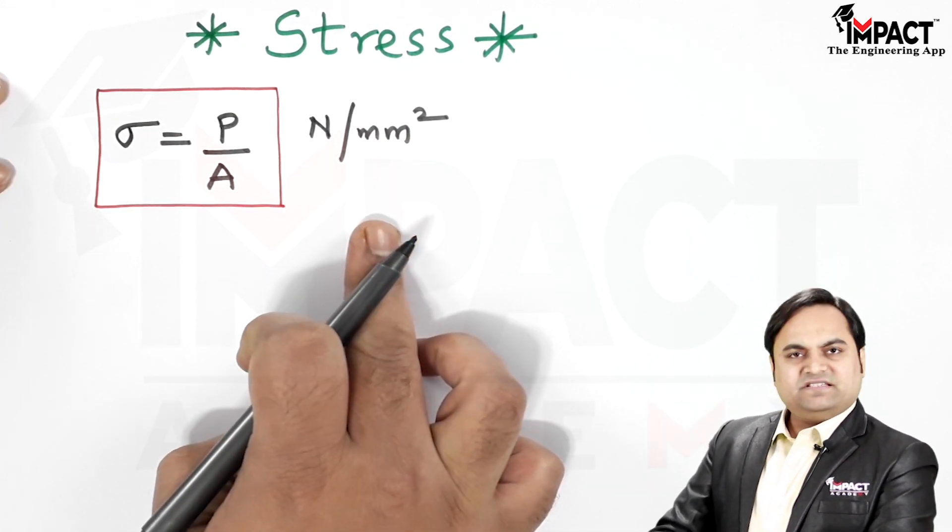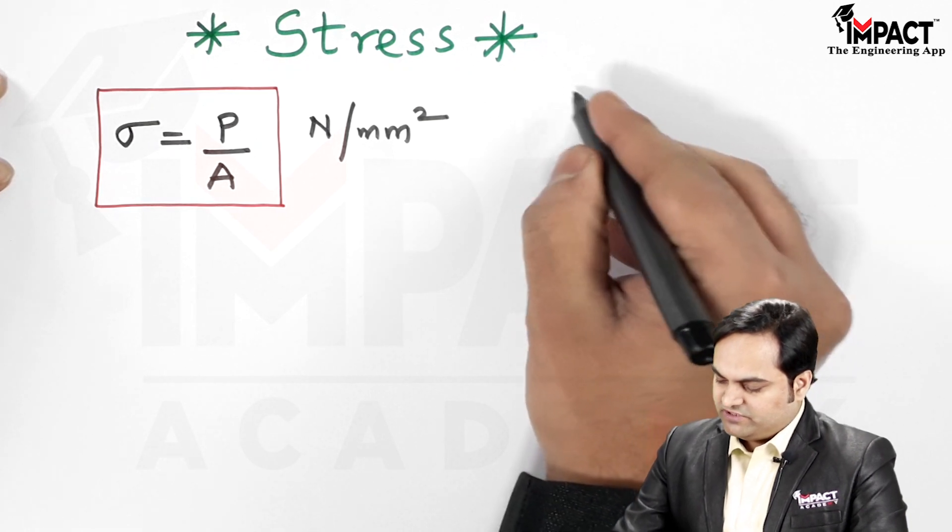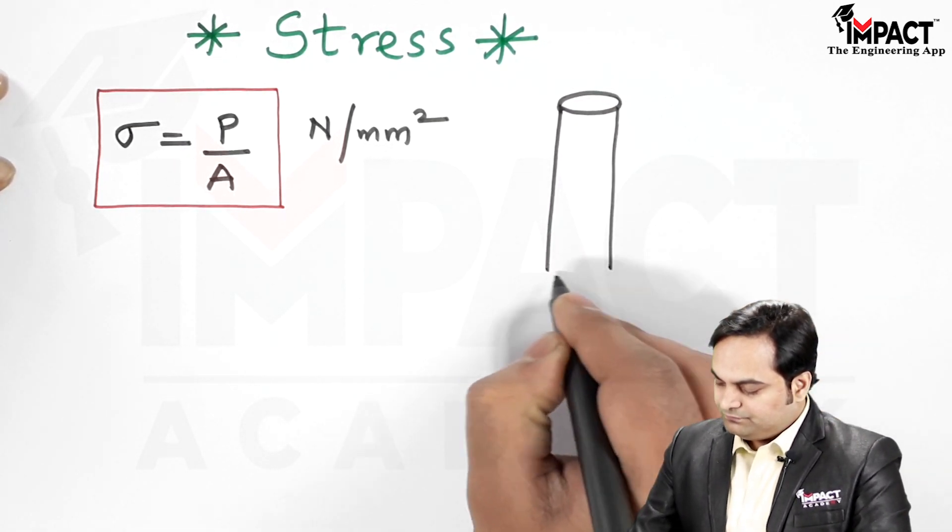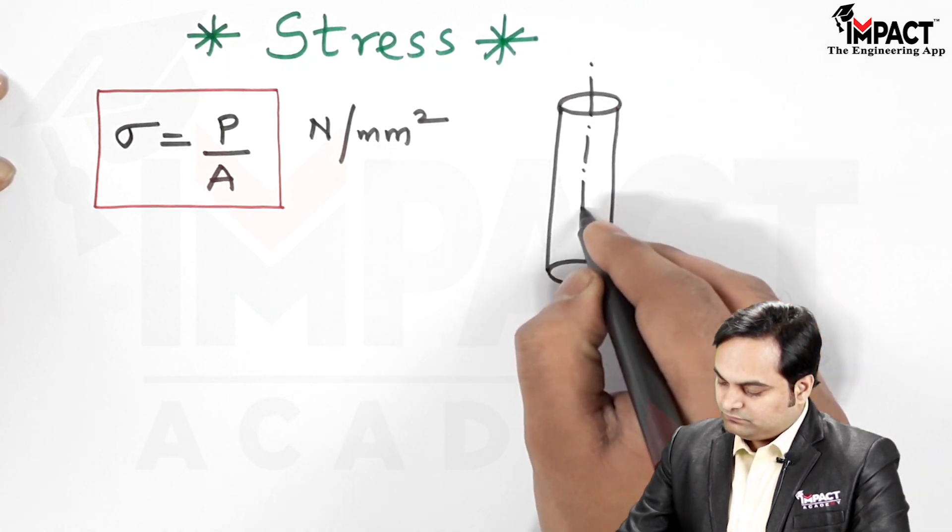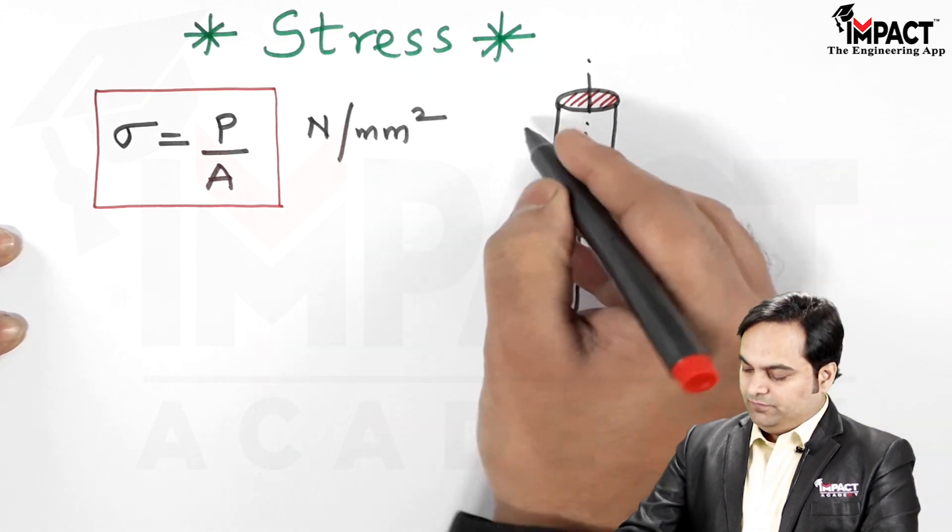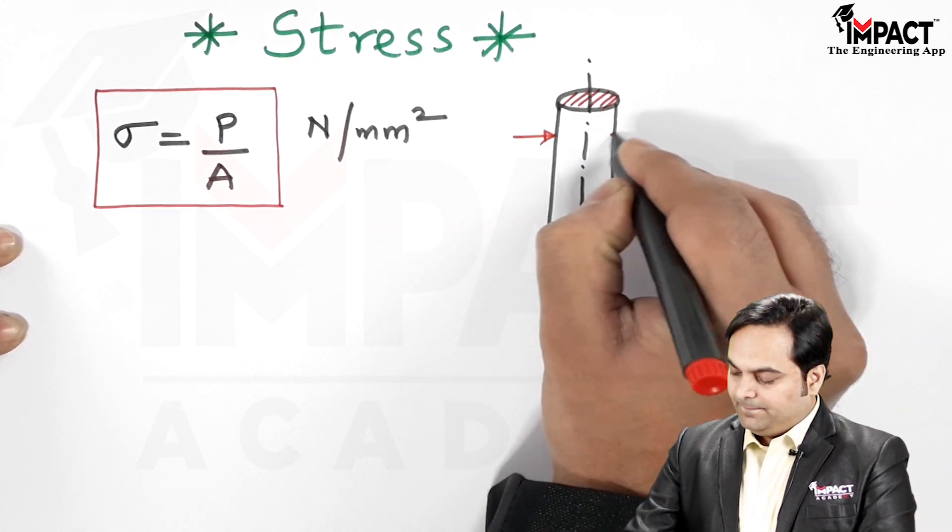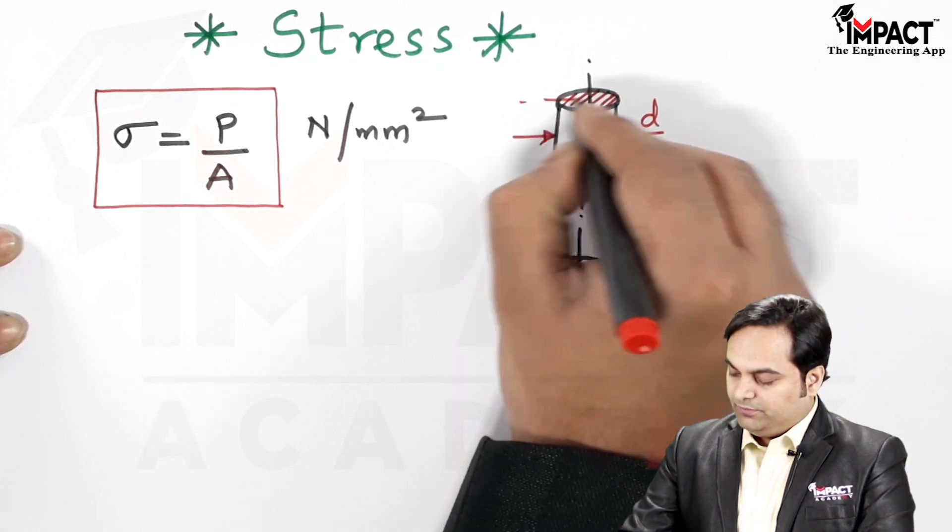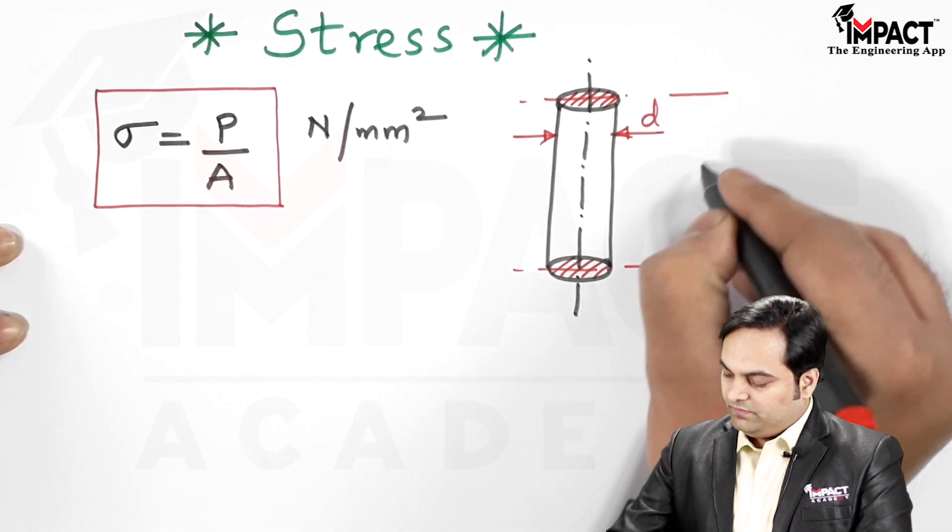Now to explain it with the help of a diagram. Here there is a rod which is having diameter D and the length of this rod is L.